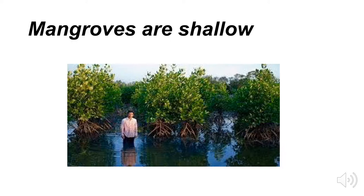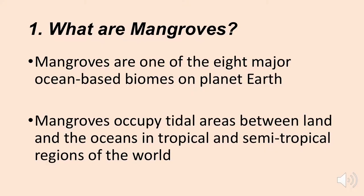Mangroves accumulate sediment. Over time the mangrove swamp fills up and the mangroves move out to deeper water — it's a very unique habitat. We consider mangroves one of the eight major ocean-based biomes on our planet. Mangroves typically occupy tidal areas between the land and the oceans in both tropical and semi-tropical regions; outside of those regions it's not warm enough for mangrove-type plants.